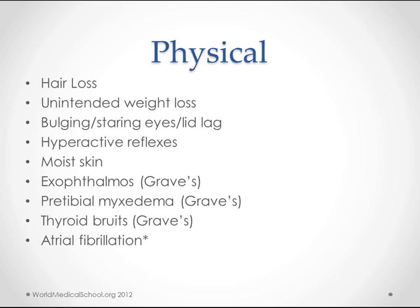There are a couple of different mechanisms behind the eye findings. One is swelling of the extraocular muscles, which can happen in any hyperthyroid patient — this makes the eyes bulge a little and reduces eye movement, giving that staring look. The other is exophthalmos, which has a similar appearance but is caused by swelling of the periorbital fat and is only seen in Graves' disease. The bulging eyes from general hyperthyroidism are reversible with treatment, whereas exophthalmos is not reversible without surgery.